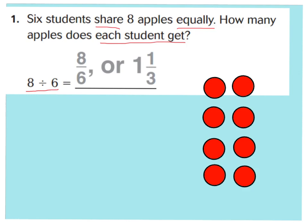You can actually look at the fraction bar as a sign to divide, so it would be eight divided by six, which is also a fraction greater than one whole because it can be changed to a mixed number. If there's eight apples and six kids, each kid is going to get at least one apple. Here are my apples — each one gets one apple. But now you can see we have two out of the eight left over.